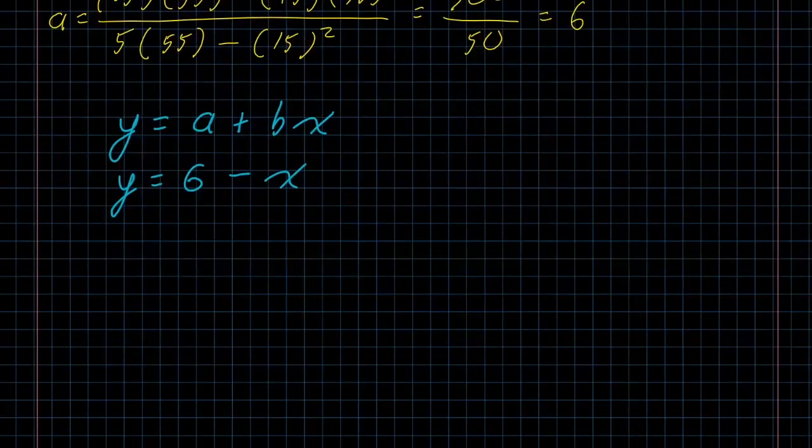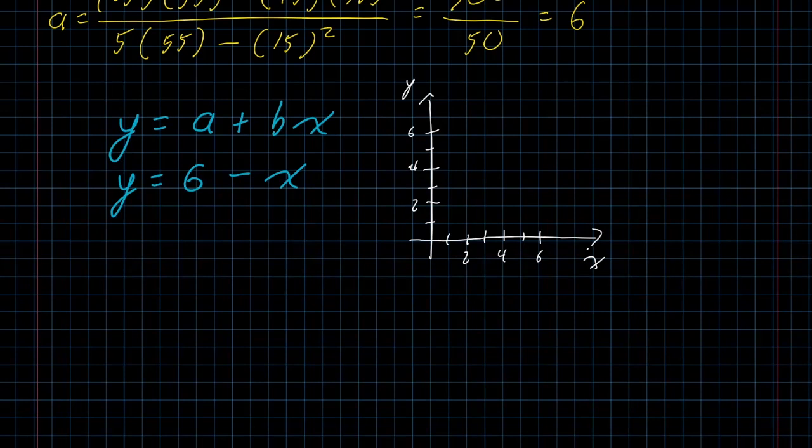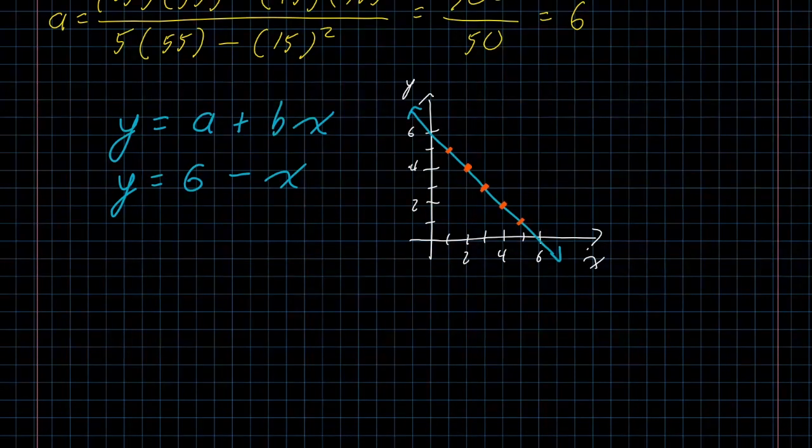And if you graph y equals 6 minus x, using techniques that you remember from an algebra class, you get a line that looks like that. If you plot our data from this distribution, you get five points that fall exactly on the line. So that worked out very nicely indeed.